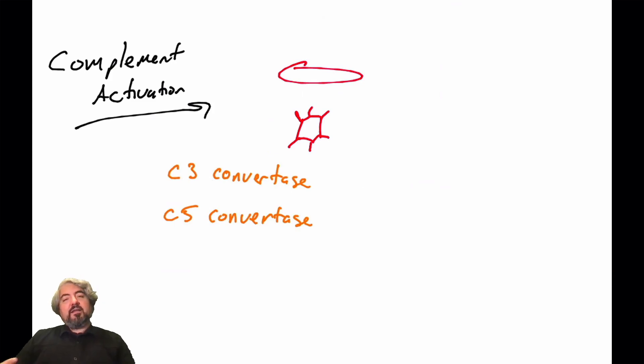Recall that there are complexes that form during complement activation called C3 convertases and C5 convertases. There are multiple versions of these convertases, which we've covered in past videos. For now, we're just talking about the fact that when a C3 convertase is formed and is active, the C3 convertase will cleave C3 into C3A and C3B. We spoke about what C3B does. C3B can covalently attach to the surface of pathogens. That's complement fixation.